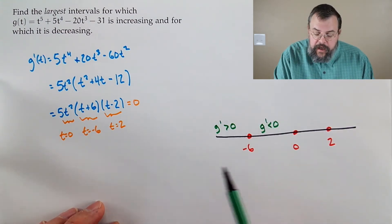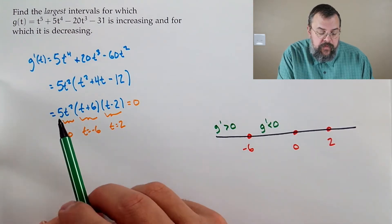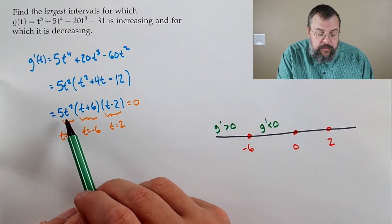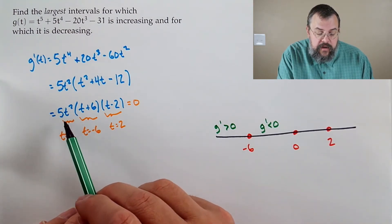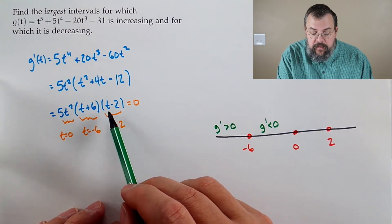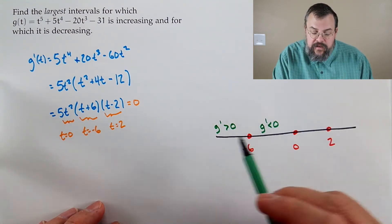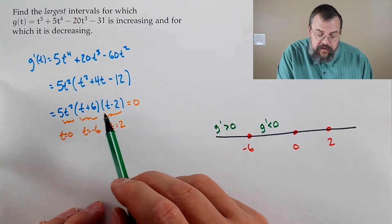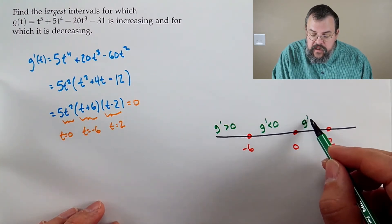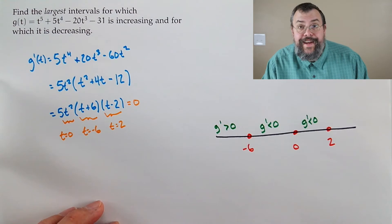Between 0 and 2, pick t equals 1. 5 times 1 squared is positive; 1 plus 6 is positive; 1 minus 2 is negative. Still positive, positive, negative — the derivative is still negative on this interval as well.